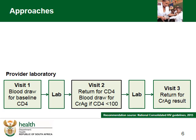So what do we mean by reflexive test and treat? Up until recently, patients diagnosed with HIV would first have to return for the result of the CD4 count. And if the CD4 was found to be less than 100, then another blood was taken for cryptococcal antigen. This had led to delays in the initiation of patients in the population that need ARVs the most.